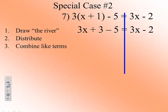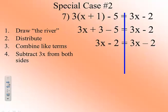Then we're going to combine like terms on the left side. 3 minus 5 is a negative 2. So we end up with 3x minus 2 equals 3x minus 2.